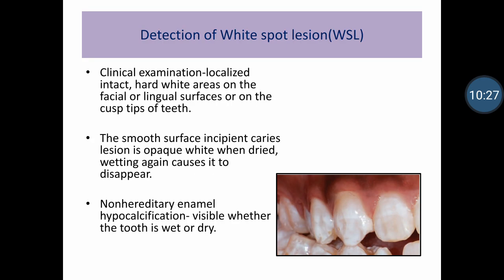The most challenging aspect is detecting white spot lesions. White spot lesions are incipient smooth surface caries seen on the facial and lingual surfaces or on the cusp tips of teeth. The key diagnostic feature is that on drying, these smooth surface incipient caries appear as white opaque areas, but on wetting they tend to disappear. This is the major distinguishing feature from non-hereditary enamel hypocalcification, where the white patchy areas appear irrespective of drying or wetting. White spot lesions appear on drying but disappear on wetting.